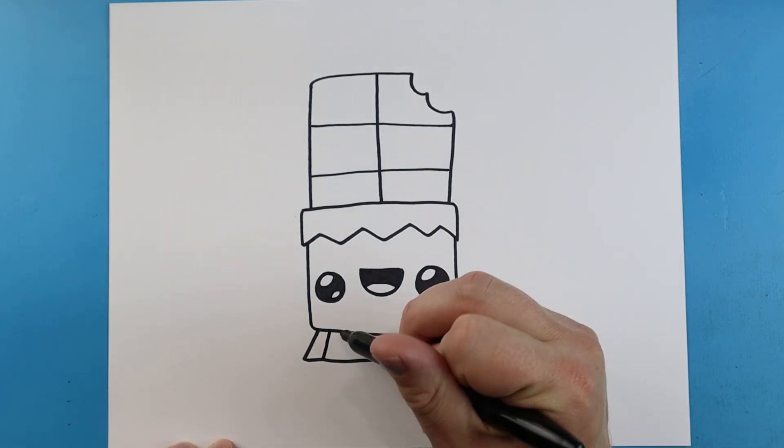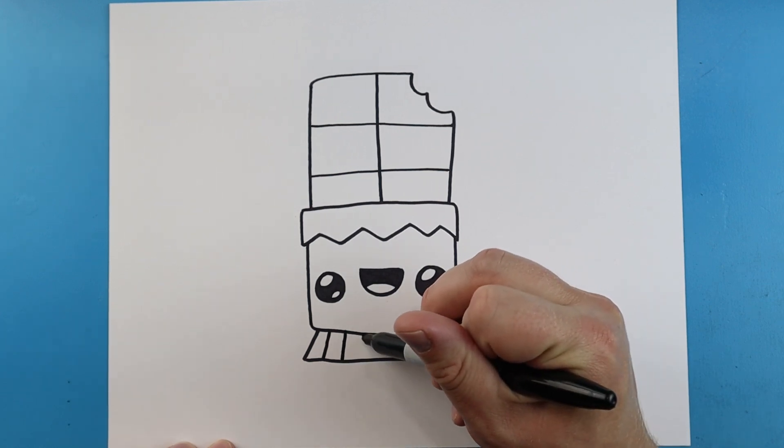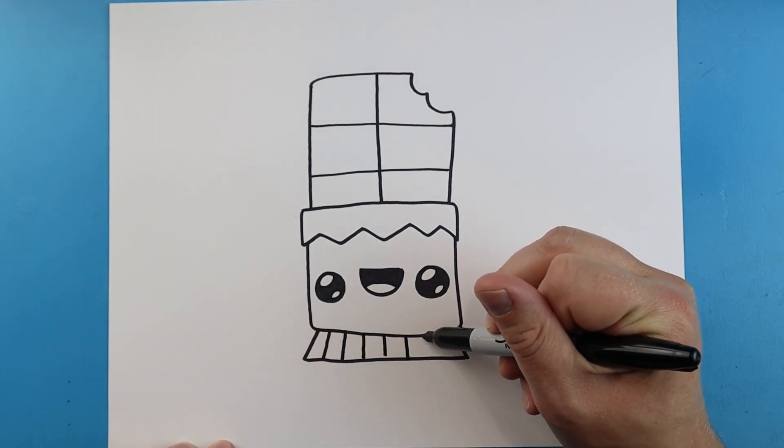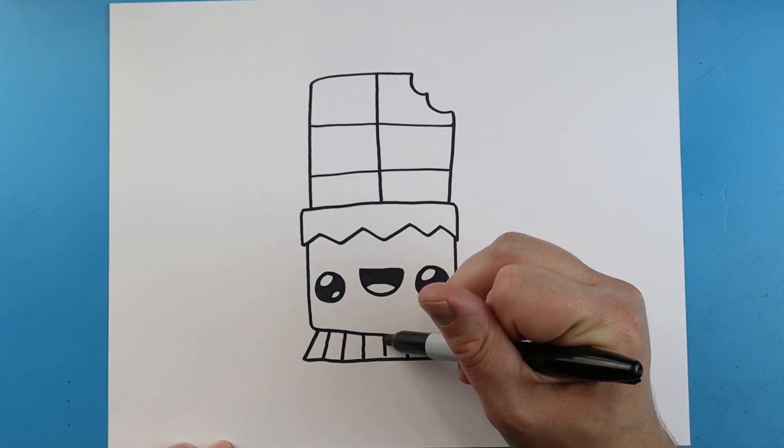Now starting here at the bottom I'm just going to draw some little lines that go straight down for the bottom of our candy bar wrapper.